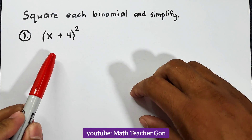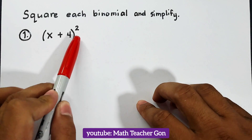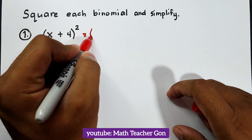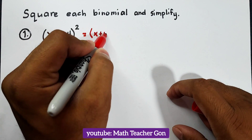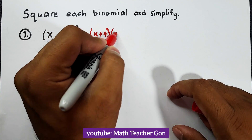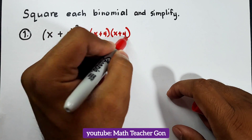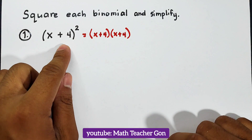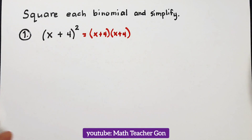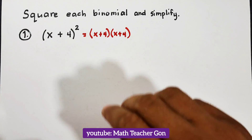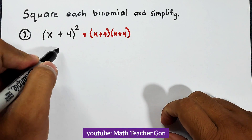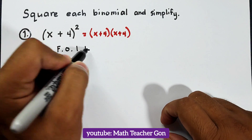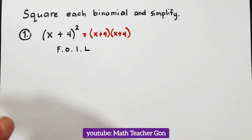Before we start, if you have x plus 4 to the second power, that is the same as x plus 4 times x plus 4. We can expand this given binomial into this form, and once expanded we can use the FOIL method.